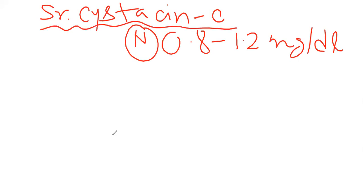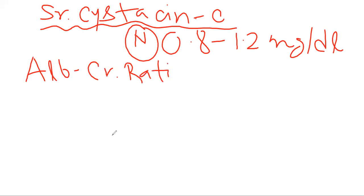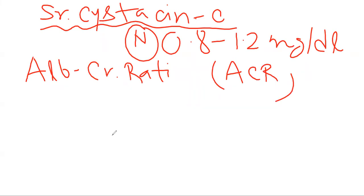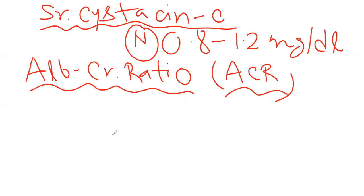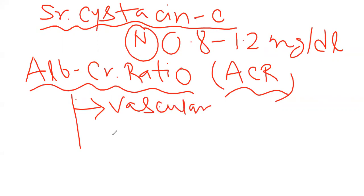Next, the newer parameter is the albumin-creatinine ratio, which is also known as ACR. Its normal range — basically it helps to detect and has some diagnostic value and some prognostic value. In case of vascular endothelial dysfunction it has diagnostic value.